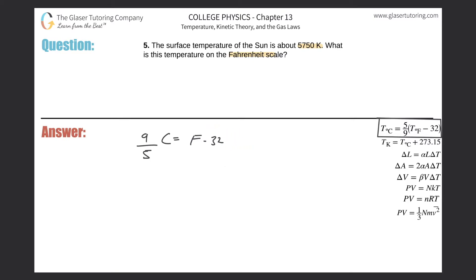And then if you wanted to add the 32 on over to the left hand side, that's what you would do. And the Fahrenheit temperature then comes out to be nine C over five plus 32.